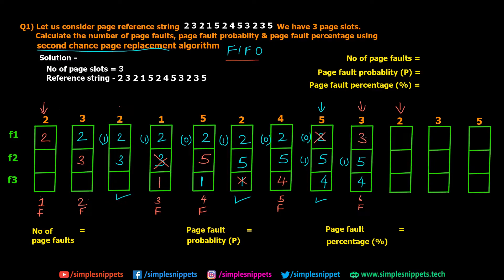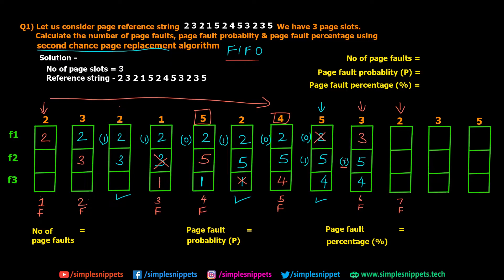Page 2 is requested. Currently we have pages 3, 5, and 4 in memory, so this is the 7th page fault. Applying FIFO: page 3 just came in, so we skip it. Between pages 5 and 4, page 5 came in before page 4. But page 5's reference bit is 1, so it gets a second chance. Therefore page 4 is replaced with page 2. Pages 3 and 5 remain, and the reference bit of page 5 is reset to 0.